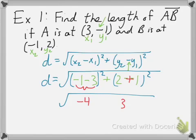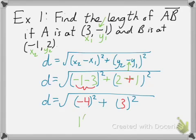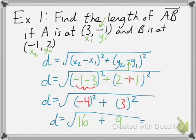Okay, so now let's compute the squares. Negative 4 squared means negative 4 times negative 4. That's going to be a positive 16 — negative times a negative is a positive. 3 squared is 9. So then we've got 16 plus 9. That would be 25. Square root of 25 is 5. So the distance between those two points is 5.